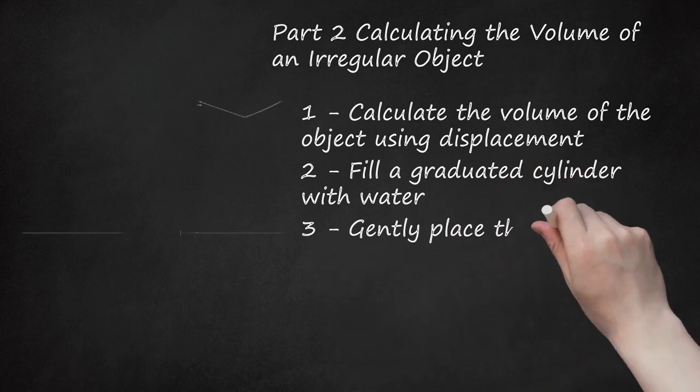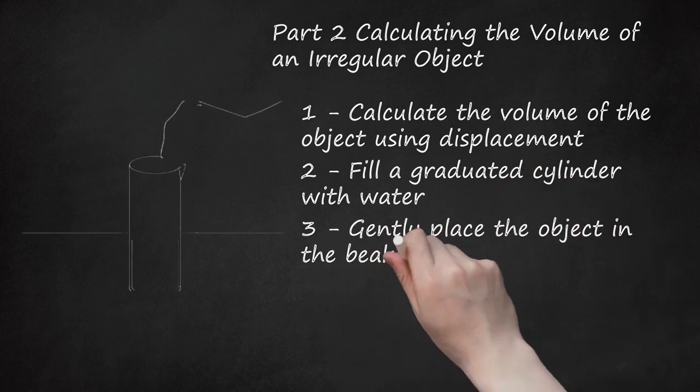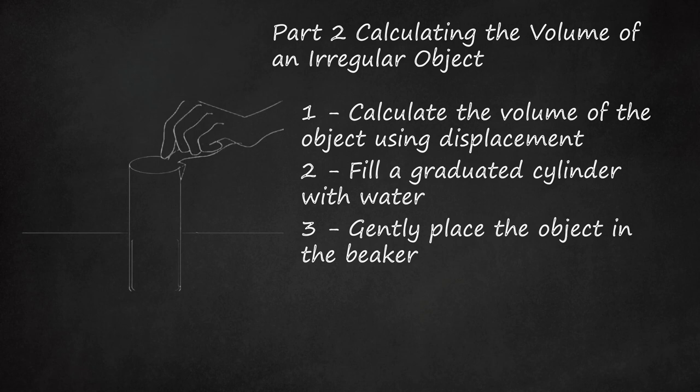Step 3: Gently place the object in the beaker. Take care not to drop the object in the water as this can lead to some water splashing out of the graduated cylinder. Ensure that your object is fully submerged. Record the new water level of the beaker, again at eye level paying close attention to the meniscus.